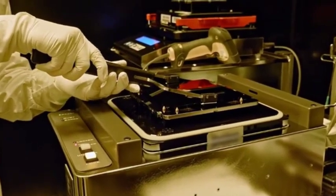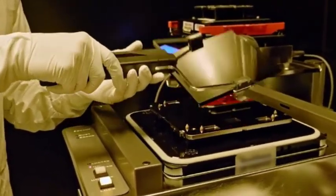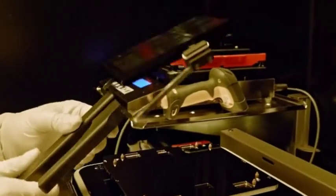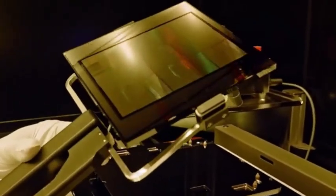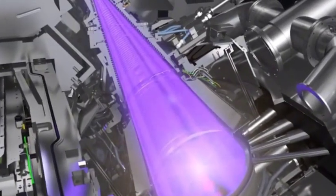Especially in the field of high-end photoresist, such as EUV photoresist, only Japanese manufacturers in the world can manufacture it. This single reliance on the supply chain puts China's chip manufacturing at risk of supply interruption.